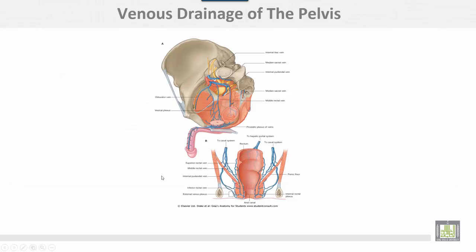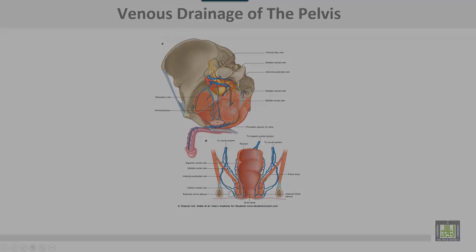This is the venous plexus around the front organ — rectal. Here is the prostatic plexus. This is the vesical venous plexus of the pelvis.